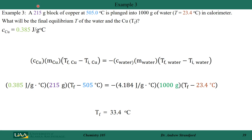Let's do another example. A 215-gram block of copper at 505.0°C is plunged into 1000 grams of water at 23.4°C inside a calorimeter. We want to calculate the final equilibrium temperature that both the water and copper reach. We need the specific heat of copper from a table, and the specific heat of water — 4.184 J/(g·°C) — which by now is becoming familiar.